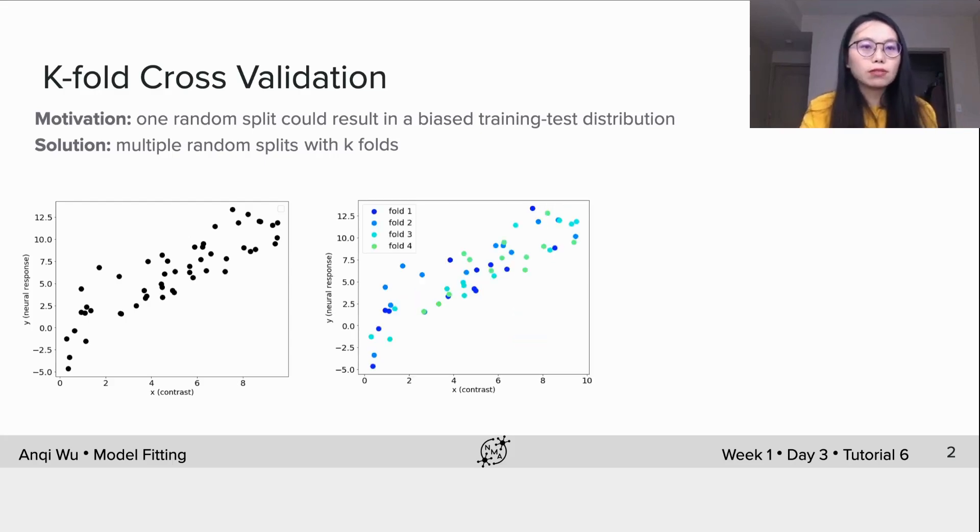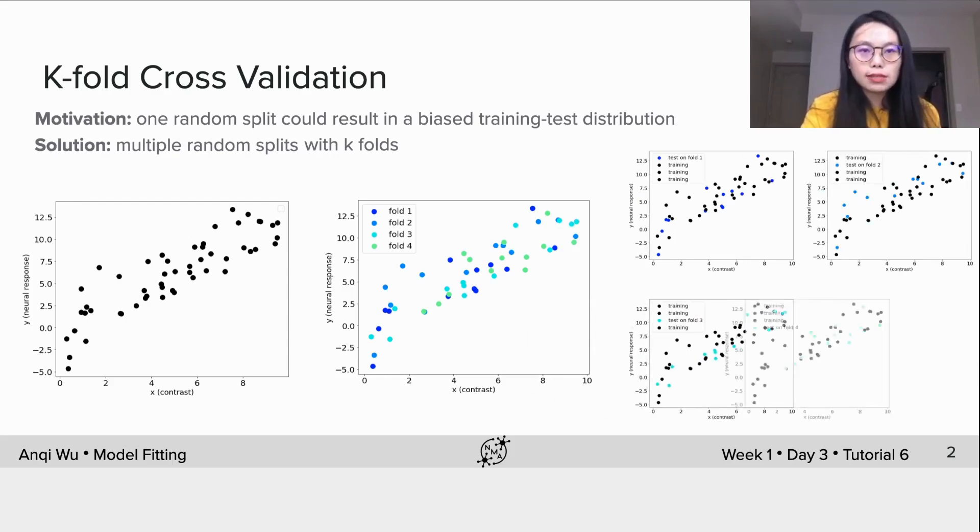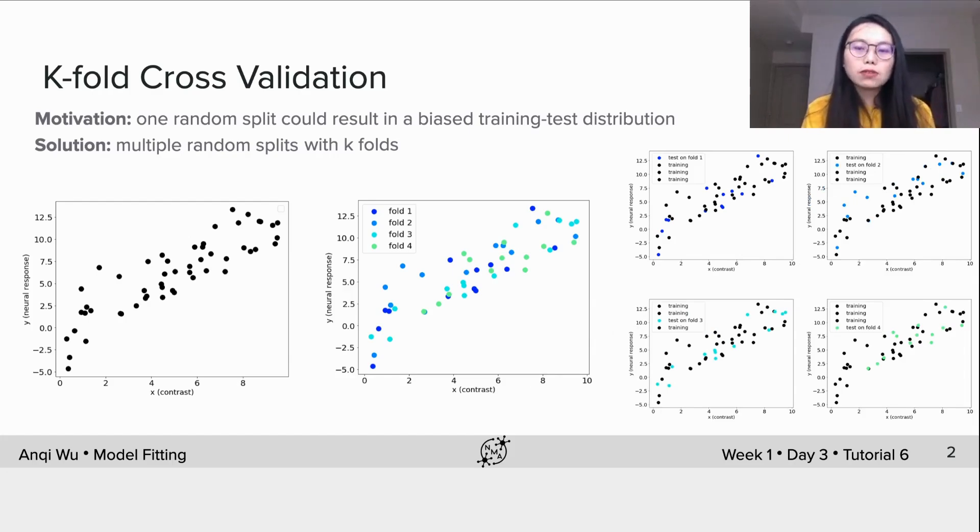Here's what I mean by k-folds. We randomly split the data set into four folds. The number of data points in each fold would be similar. Each color corresponds to one fold. Next, we construct four training and test splits. Each one uses one fold as the test set and other folds as the training set.